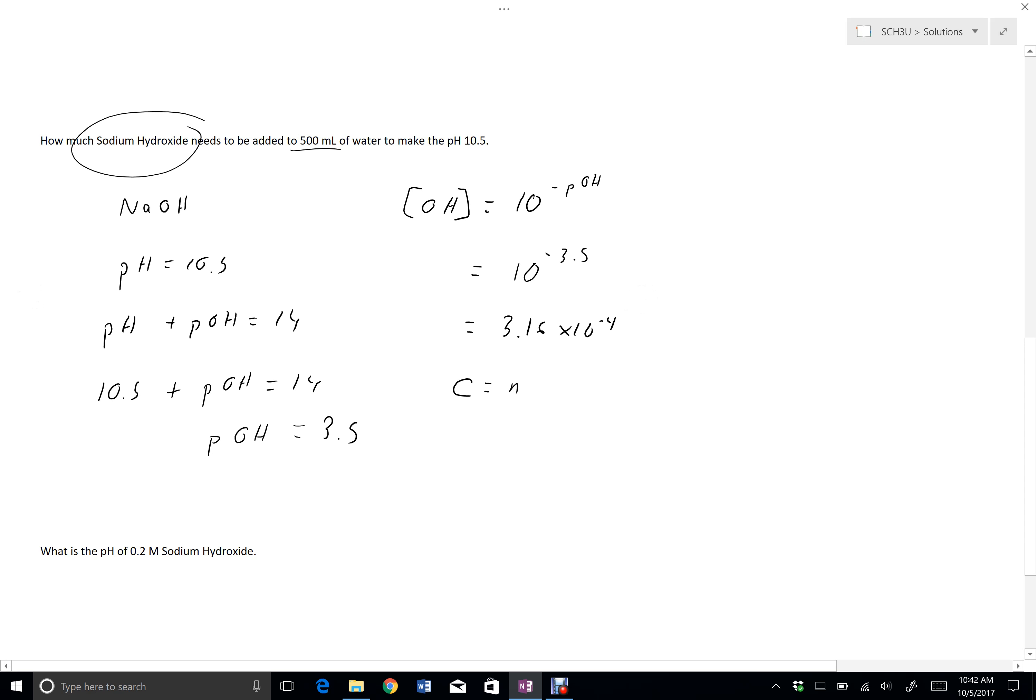Concentration equals moles over volume. So 3.16 times 10 to the negative 4 moles over 0.5 liters. I have 1.58 times 10 to the negative 4 moles.